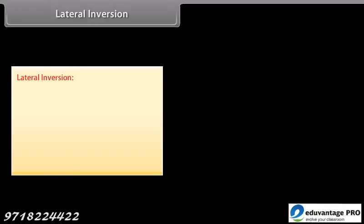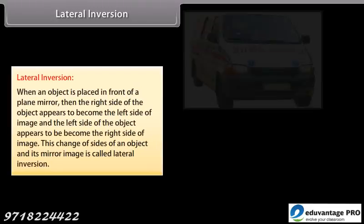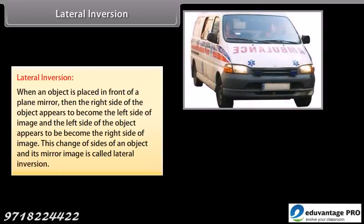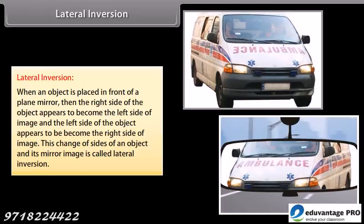Lateral inversion. When an object is placed in front of a plane mirror, then the right side of the object appears to become the left side of image, and the left side of the object appears to become the right side of image. This change of sides of an object and its mirror image is called lateral inversion.